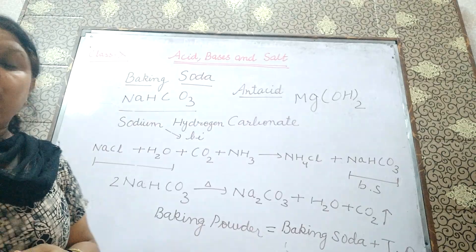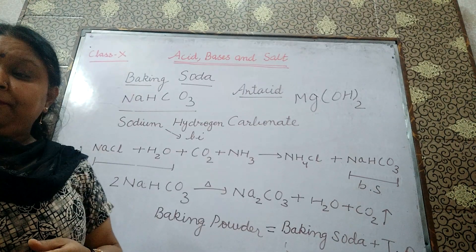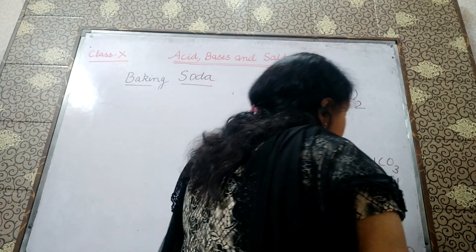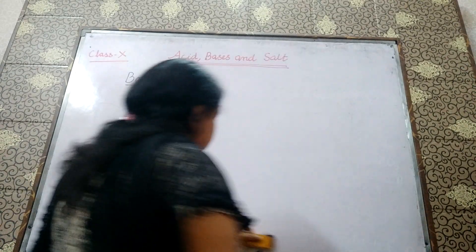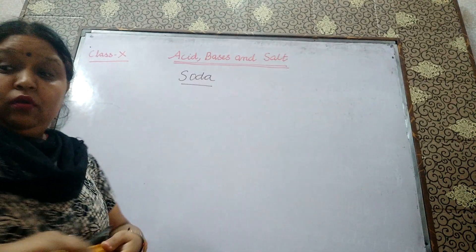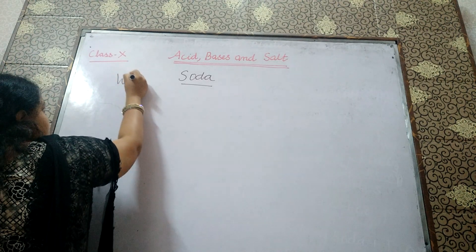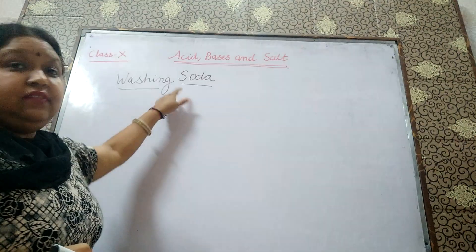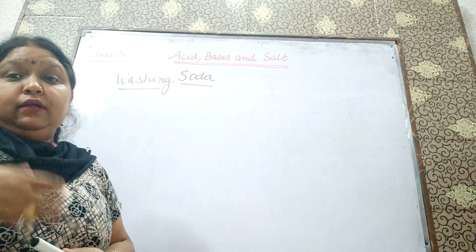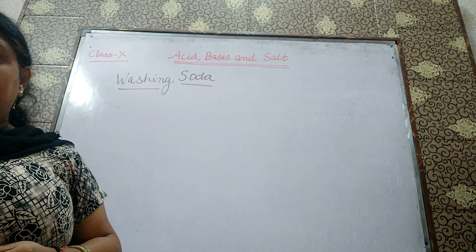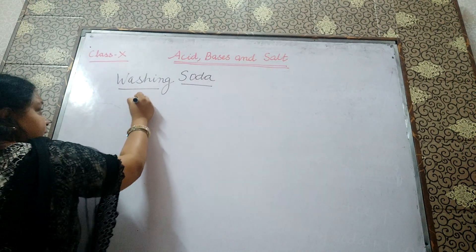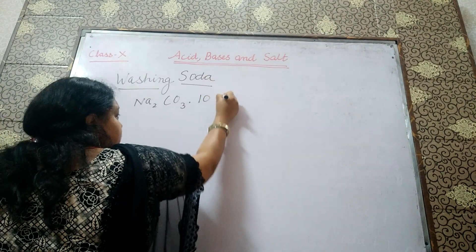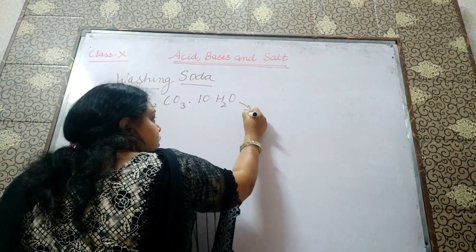We have completed baking soda. In this video, we are going to read washing soda. Washing soda, as the name indicates — can you tell what will be the uses of washing soda? Washing soda is used for washing purpose. Washing soda is the substance which is used for making soap and detergent. What is the formula for washing soda? If I take Na2CO3 along with 10H2O — what is this 10H2O? This 10H2O is called water of crystallization.